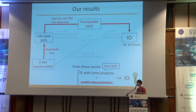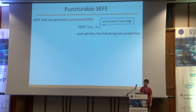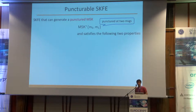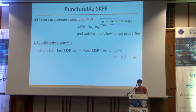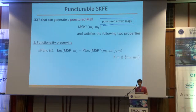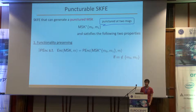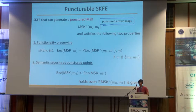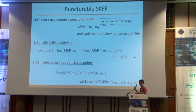Our key tool is puncturable SKFE. A puncturable SKFE can generate a punctured master secret key, MSK*, punctured at two messages M0 and M1. It satisfies two properties. The first is the functionality-preserving property: there exists a punctured encryption algorithm PENC that, given MSK* and message M, outputs a ciphertext exactly the same as the ordinary encryption algorithm if M differs from M0 and M1. The second is semantic security at punctured points: encryptions of M0 and M1 under the ordinary master secret key are computationally indistinguishable even if MSK* is given.